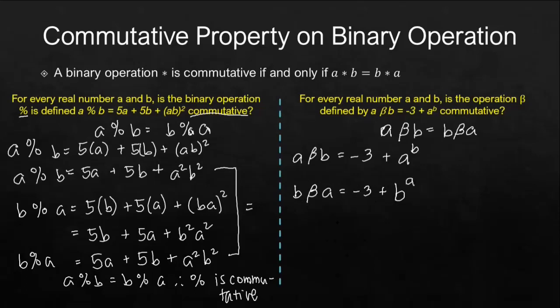So if you may notice, negative 3 plus a raised to b is obviously not equal to negative 3 plus b raised to a, simply because by simple observation we can say that the placing of the variables here, a raised to b and b raised to a, are really different. So we can say that this binary operation beta is not commutative for the real numbers.